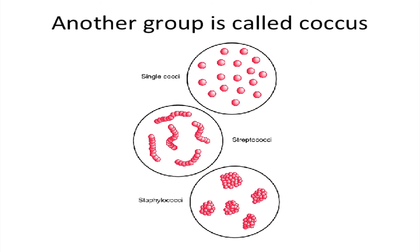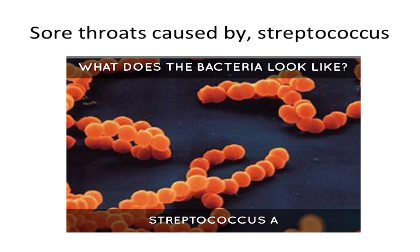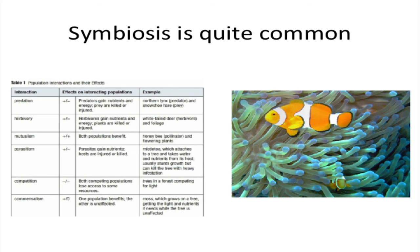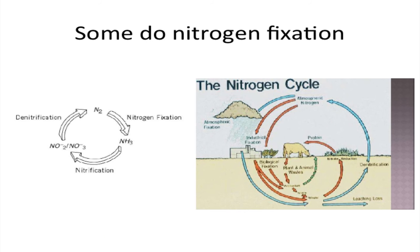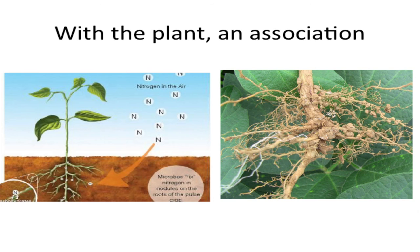Another group is called coccus — sore throat is caused by streptococcus. Symbiosis is quite common, they make quite a good companion. Some do nitrogen fixation with the plants in association.